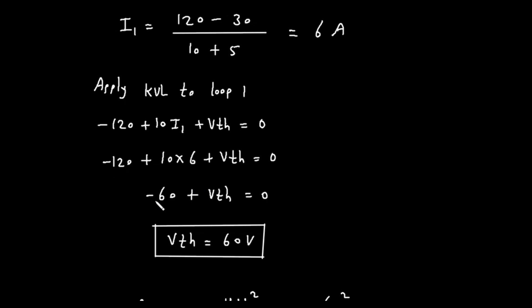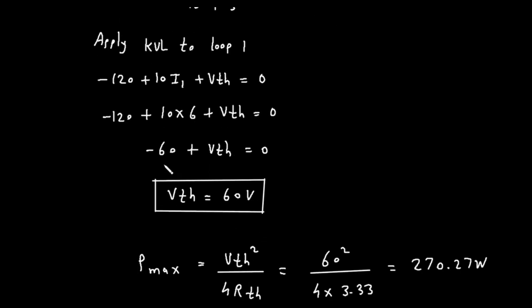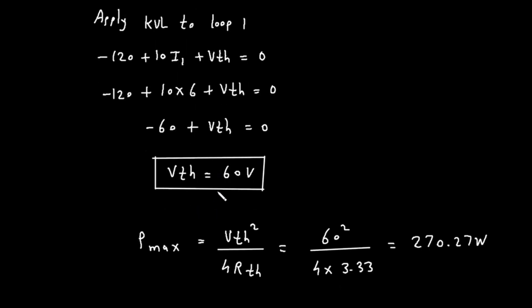Combining the constant terms, negative 120 plus 60 is negative 60. So, we have, negative 60 plus VTH equals 0. By adding 60 to both sides, we find that the Thevenin voltage, VTH, is equal to 60 volts.